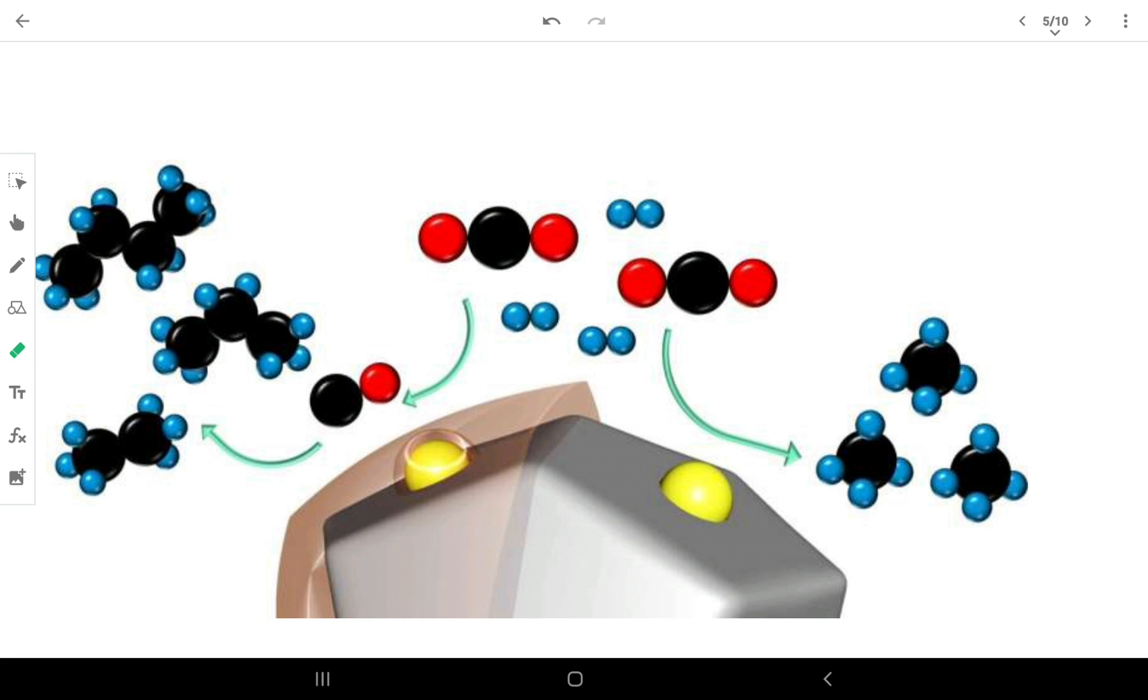It produces thousand times more butane, the longest hydrocarbon it could produce, than the previous Stanford catalyst given the same amount of carbon dioxide, hydrogen, and other ingredients.